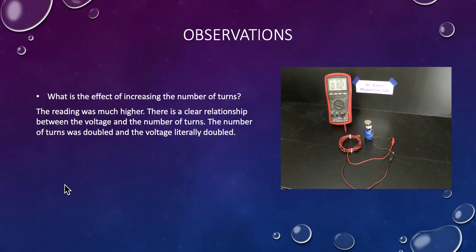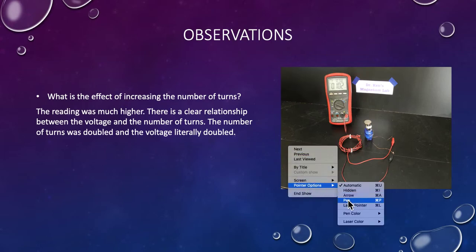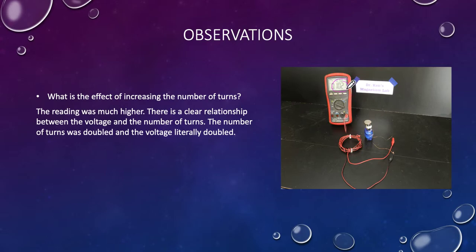What is the effect of increasing the number of turns? Well, that was rather dramatic, wasn't it? We got 102 millivolts, so the reading was much higher. There's a clear relationship between the voltage and the number of turns. The number of turns was doubled and the voltage literally doubled. So originally we were getting something in the order of about 42 millivolts, and we doubled the number of inductance coils and we pretty well doubled the voltage. So clearly there is a direct and proportional relationship to the number of turns.